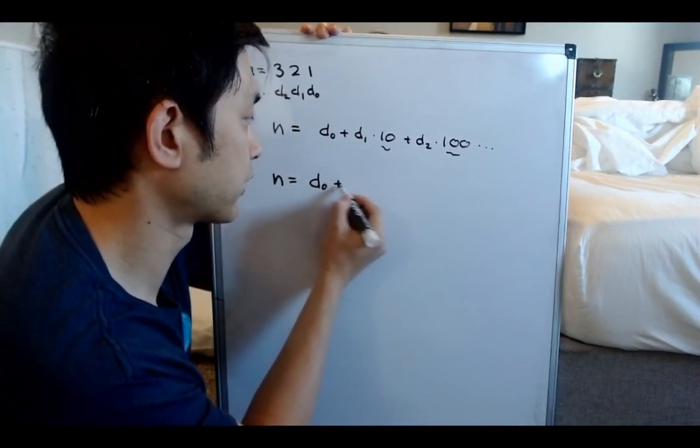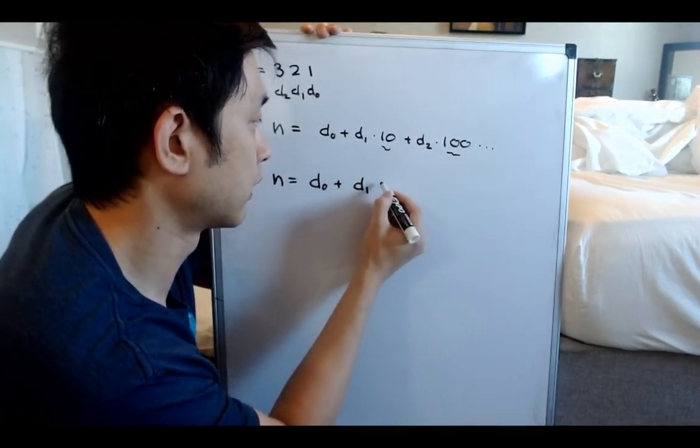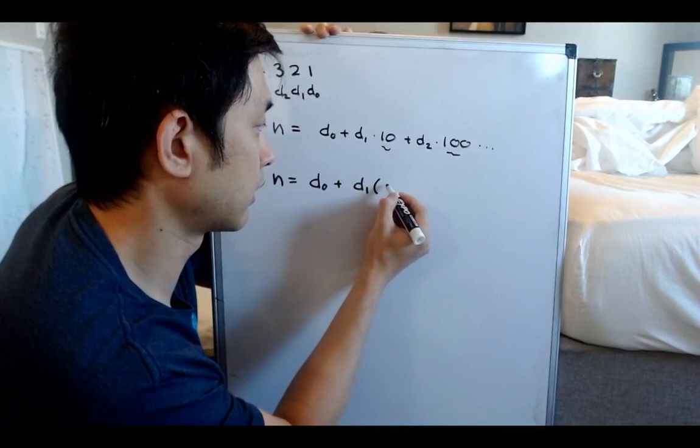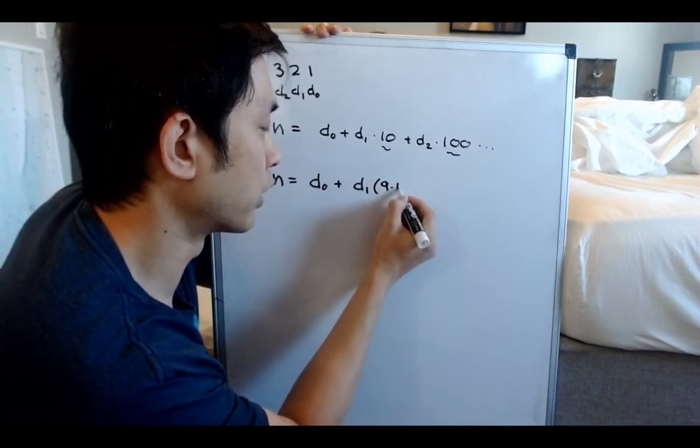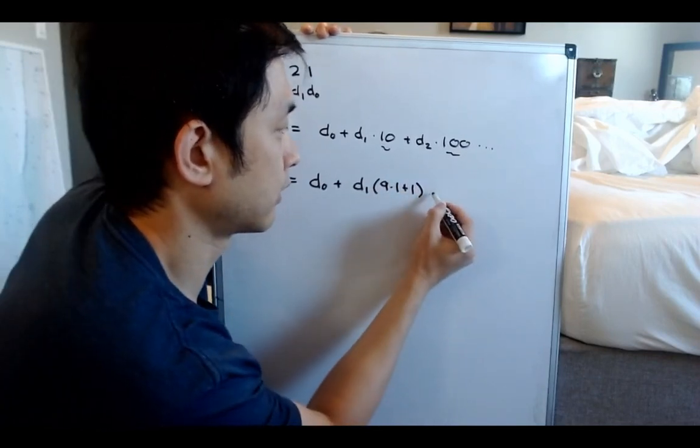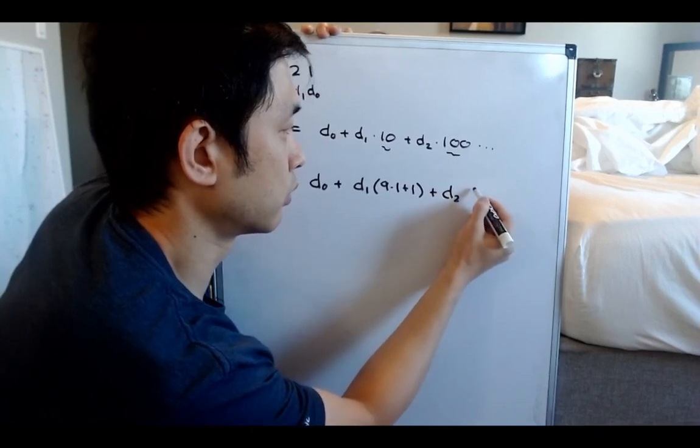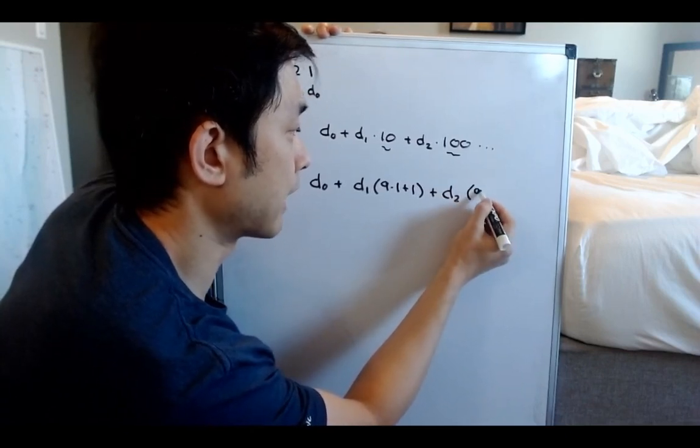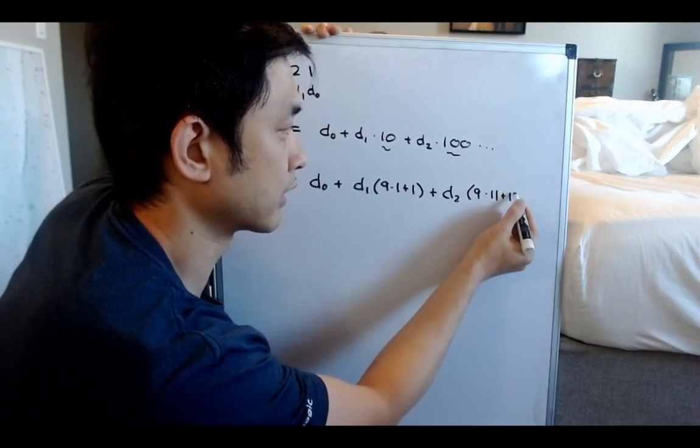So say that we could represent this a little trickier and say, how about D0 plus, instead of 10, we'll say D1, it'll be 9 times 1 plus 1, because that equals 10. And same, we'll say, well, what about D2? We'll say 9 times 11 plus 1, because that's going to equal 100.